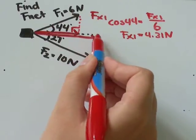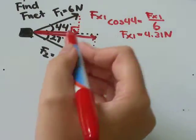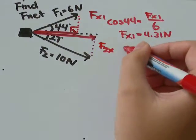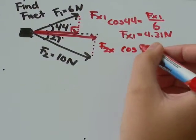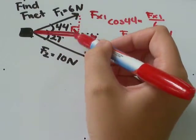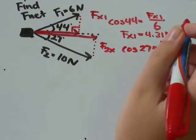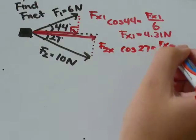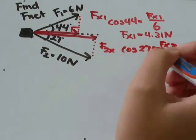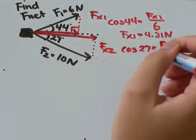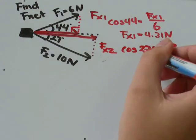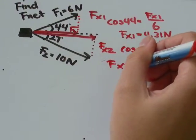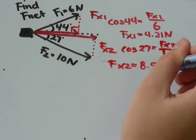I'll do the same thing with the longer x vector. So that comes from the second force. So I'll call that Fx2. And this time it'll be cos of 27 degrees equals Fx2 over 10 newtons. It doesn't really matter what you call them, as long as it's something that makes sense to you. So cos 27 times 10, I got that that equals to 8.91 newtons.